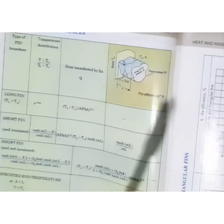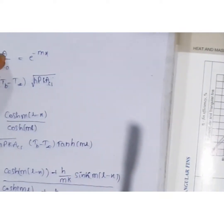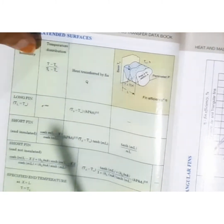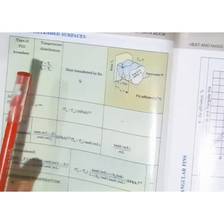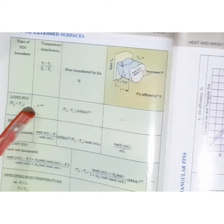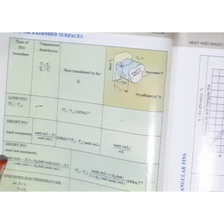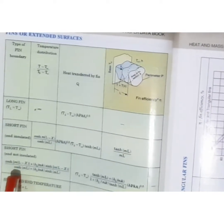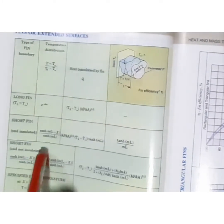The first column in the data book table is temperature distribution. Temperature distribution is expressed as theta by theta naught, where theta is T minus Tb and theta naught is Tb minus T-infinity — so it represents (T minus T-infinity) divided by (Tb minus T-infinity). For the long fin, temperature distribution is e to the power minus mx. For the short fin insulated at the tip, it is cosh m(L minus x) by cosh mL. For the short fin without insulation, the formula includes cosh m(L minus x) plus (h/mk) sinh mL terms.